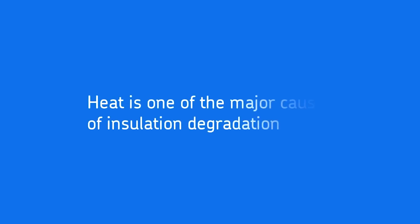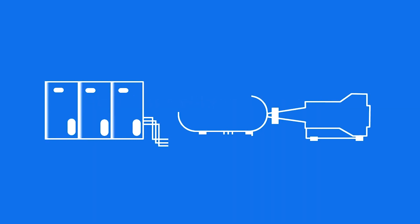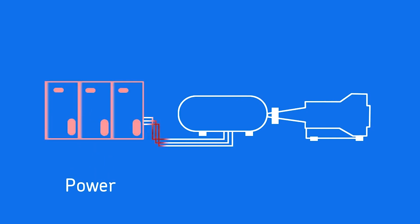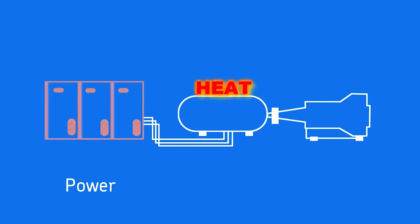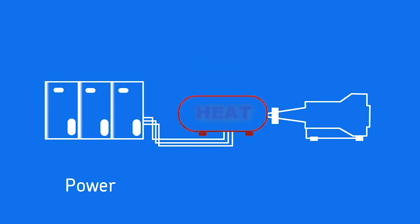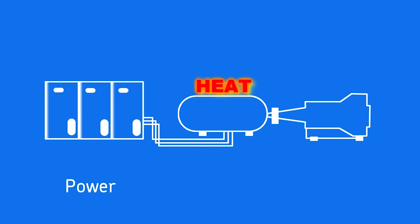One of the major causes of insulation degradation is heat. To understand more about what causes excess heat in the motor, let's look at the entire power, motor, and load system. Electric machines are designed for good incoming power conditions. When power conditions deteriorate, excessive currents can flow in the machine, generating excess heat and shortening machine life. Incoming power tests look at voltage and current levels, distortion, and balance.